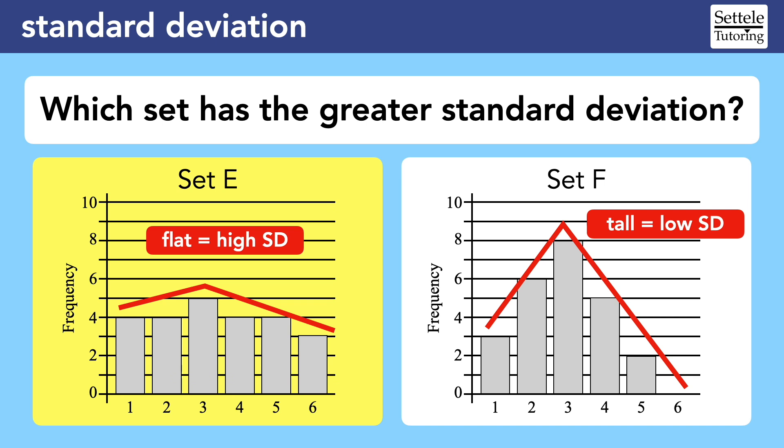So for set E, there are four 1s, four 2s, and five 3s. But for set F, there are three 1s, six 2s, and eight 3s. Most of the values in set F are 3 or very close to it, which is why it has a lower standard deviation. Let's try one last example.